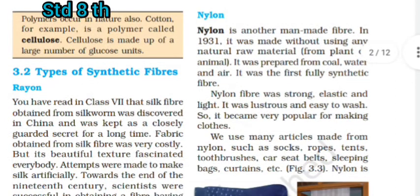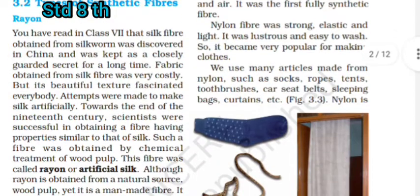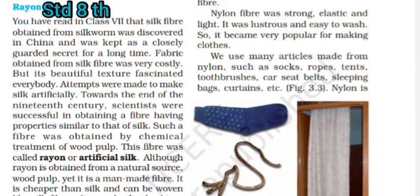Types of synthetic fibers — Rayon. You have read in class seven that silk fiber, obtained from silk worms, was discovered in China and was kept as a closely guarded secret for a long time. The fabric obtained from silk fiber was very costly, but it has a beautiful texture that everyone loves.